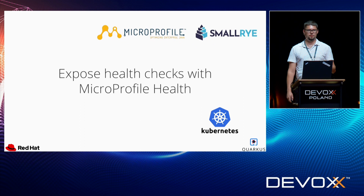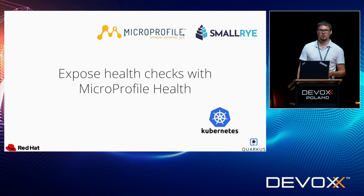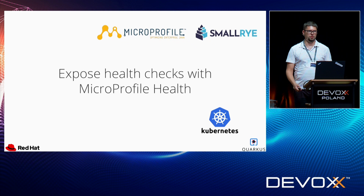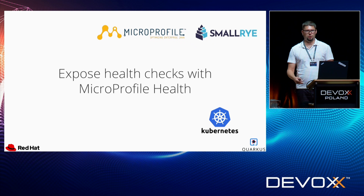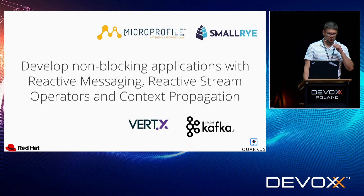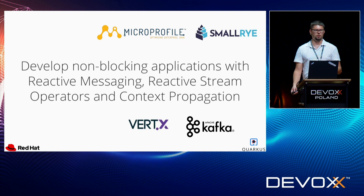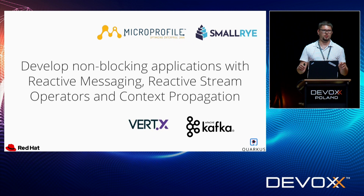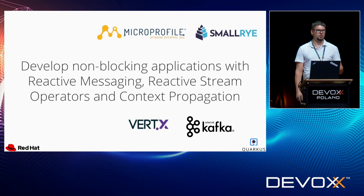There's also MicroProfile Health, which exposes endpoints that say if the application is okay. This is especially useful if you use Kubernetes, because you can point Kubernetes' liveness and readiness probes to such health checks, and then Kubernetes will know when your application is ready to handle traffic or when its pod should be wiped out and recreated. There's also a set of specifications for reactive programming, like reactive messaging or reactive stream operators. They allow you to, for example, talk with Kafka or AMQP. There's also MicroProfile Context Propagation, which propagates context — for example, a Hibernate session — to an async invocation. It's all written on top of Vert.x, so it performs well.